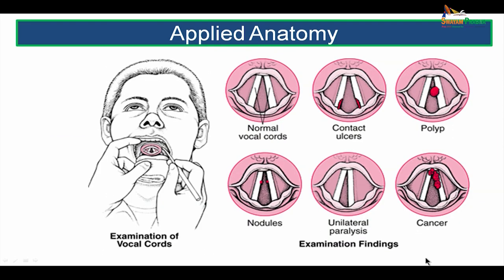Examination of the vocal cords can give various findings. Normal vocal cords appear clearly. Other findings include contact ulcers of the vocal cords, a laryngeal polyp, nodules on the surface of the vocal cords, unilateral paralysis of the vocal cord where the paralyzed vocal cord lies in the paramedian position, and malignant or cancerous growths on the vocal cords.